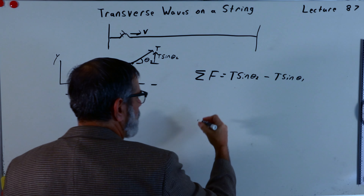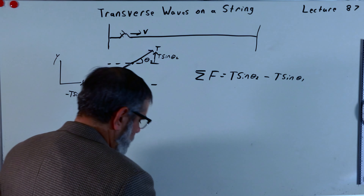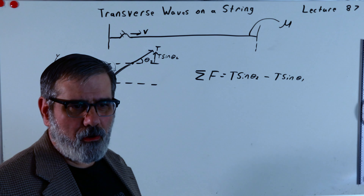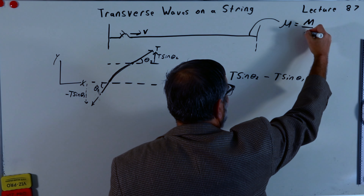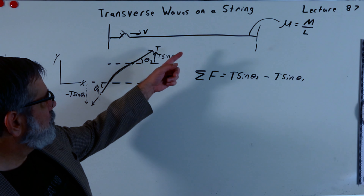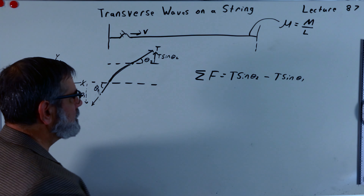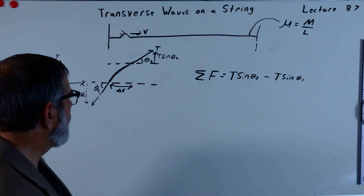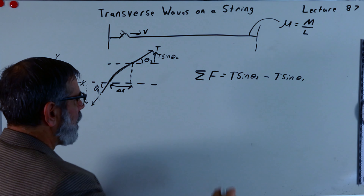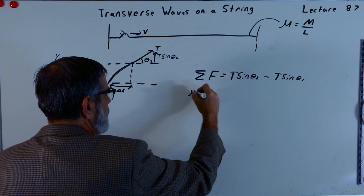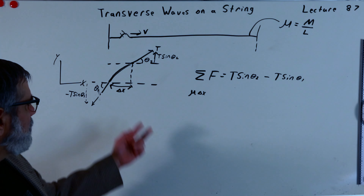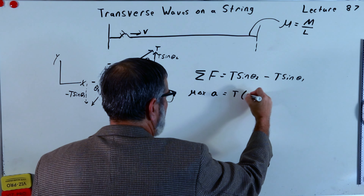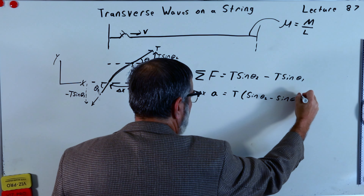Newton's second law says this is equal to the mass times acceleration. I'm going to write the mass a little bit differently. This string has a linear density — the total mass divided by the total length — which we call mu. So if I want to get the mass of this little bit of string of length delta x, it weighs mu times delta x. So mu delta x times the acceleration equals T times (sine theta 2 minus sine theta 1).